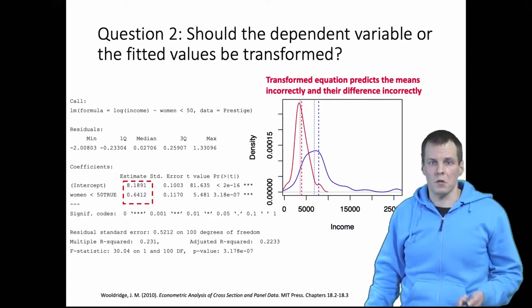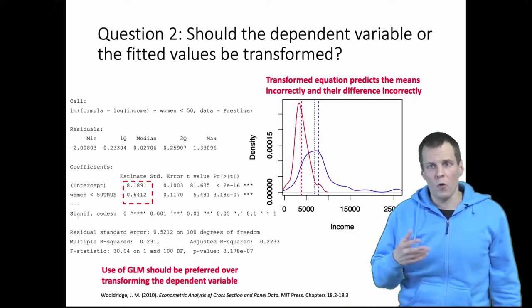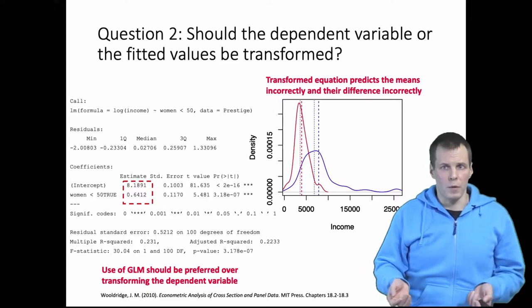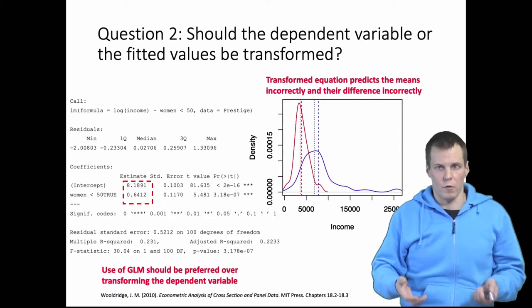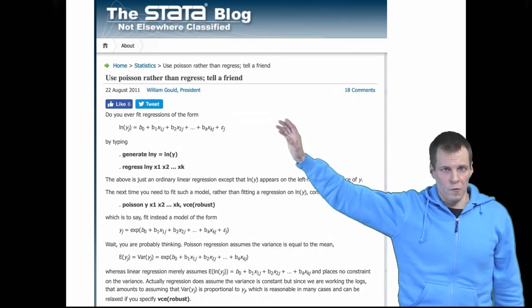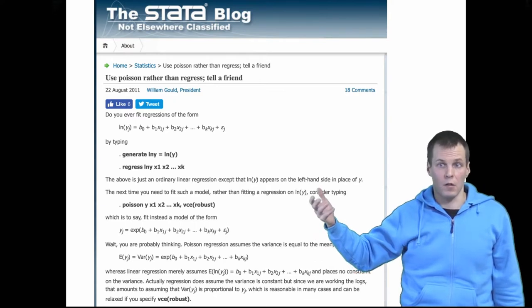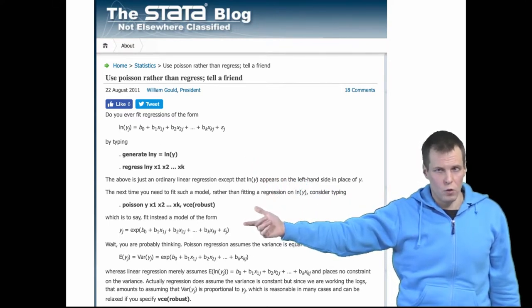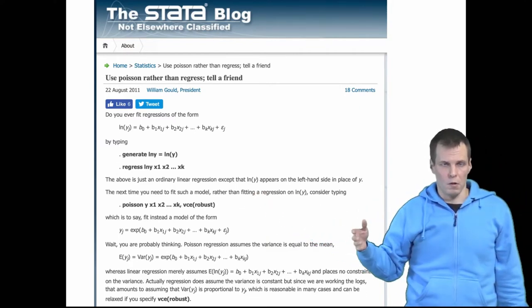So based on these considerations the GLM approach should always be preferred over transforming the dependent variable. Of course doing the transformation of the dependent variable using OLS, doing the diagnostics, that's a good starting point but in the end doing the GLM is more rigorous and that's what the end product of your research should be. There's a nice blog post about this from William Gould who is the founder of Stata and he makes a strong case with some nice references that that's actually how you should do it. So don't log transform the dependent variable, use the Poisson GLM or QMLE estimate instead with robust standard errors. That gives you better estimates than the regression on the transform dependent variable.